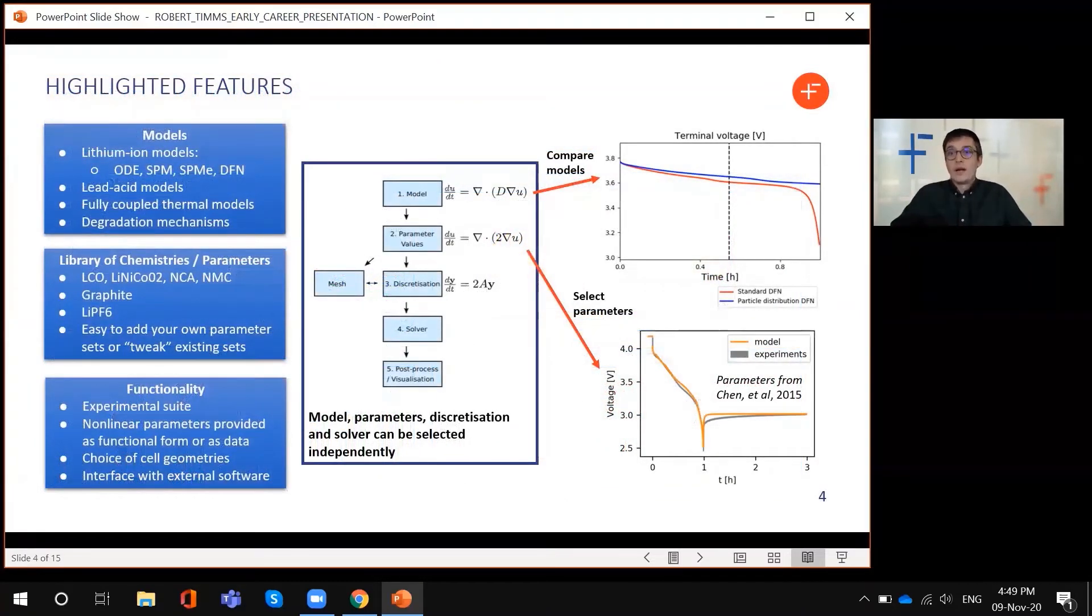Just to highlight some of the core features of PyBAMM, there's a whole bunch of models that exist in PyBAMM already. This includes some of the standard models in literature, including the single particle model and the Doyle-Fuller-Newman model, as well as thermal models which can be used with any of these and some degradation mechanisms. This is being added to constantly by work going on within Faraday and further afield. We've also got a parameter library in PyBAMM, so you can choose parameters for different chemistries, and it's easy to add your own parameters or tweak existing parameter sets.